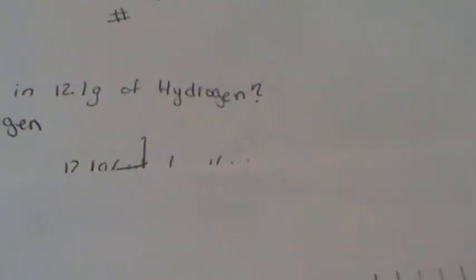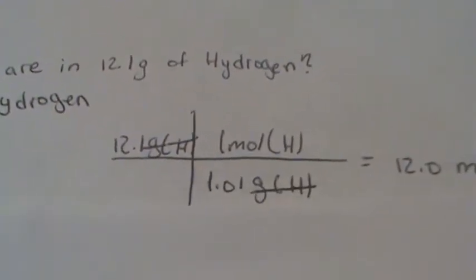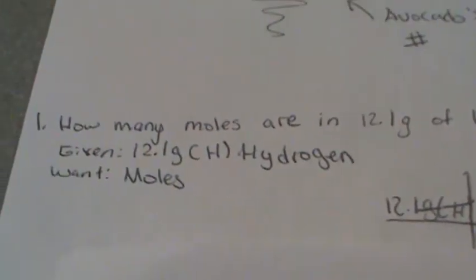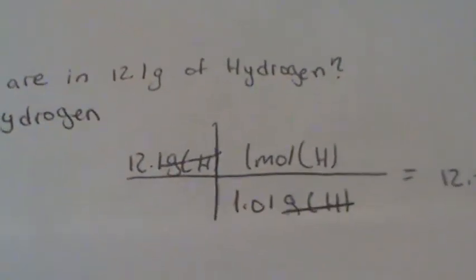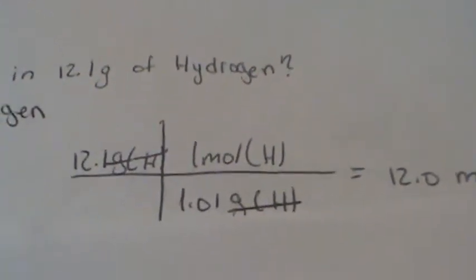So we set up our equation. We put it on our train track to set it up. First, we put 12.1 grams, since that's our given. We put one mole, symbolizing, and we put an H next to the mole.